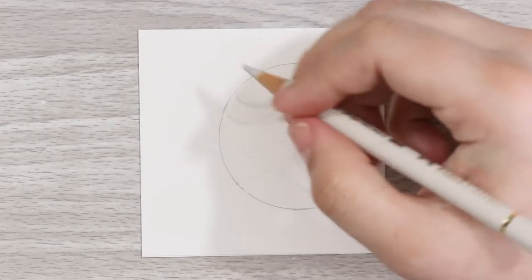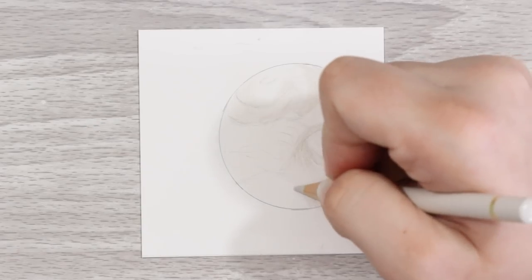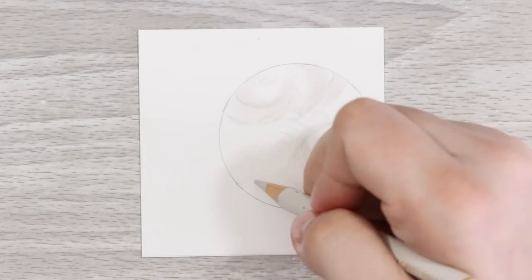The reason I like to block in shapes like this and then shade is so that it makes the texture a lot less daunting.